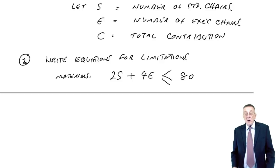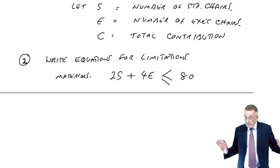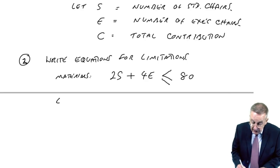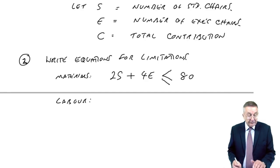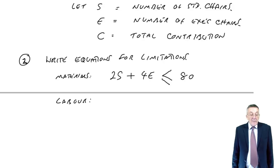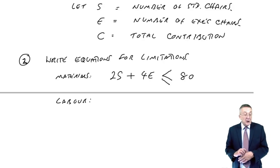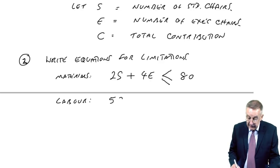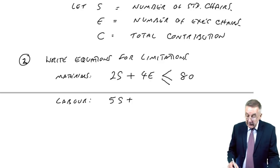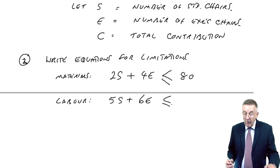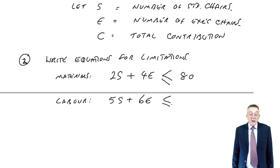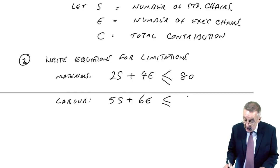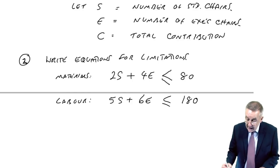Nobody says we have to use 80. If we only need 70, we'll only buy 70. In a similar way, what about labor? We have a limit on labor. How much labor do we need? S, each one needs five hours, so 5S. Each executive needs six hours, so 6E. And the total, we're limited to 180. It must be less than or equal to 180.